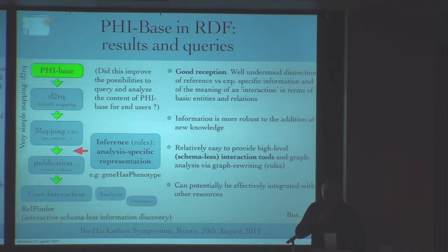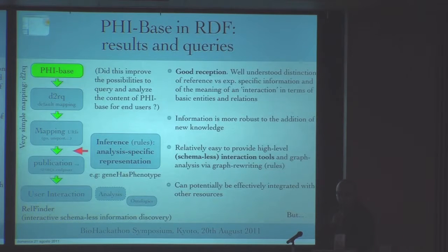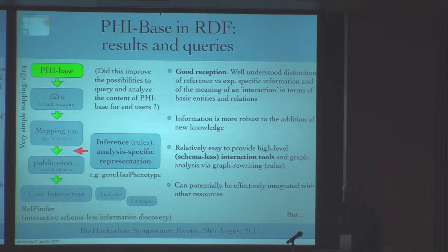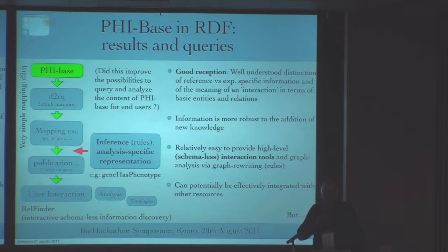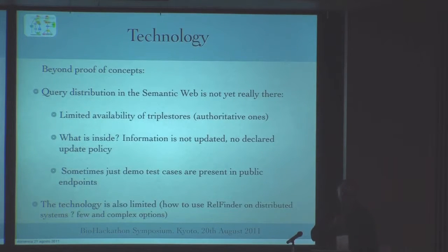In brief, how does the overall system work? We take PHI-base with the new schema. Then we have essentially a system where we add an inference engine on top of it to raise the level of abstraction to the level of gene-phenotype. And then we provide it to users through interfaces like WebFinder to find relations automatically. To cut this short, the reception is good — people are happy with it, we have an easy way to query information. But there are some limits: there is a limit to the reliability of triple stores, and usually you don't know what is inside them, when they are updated, and all that kind of stuff. So it is basically very difficult to use this technology in practice in production.